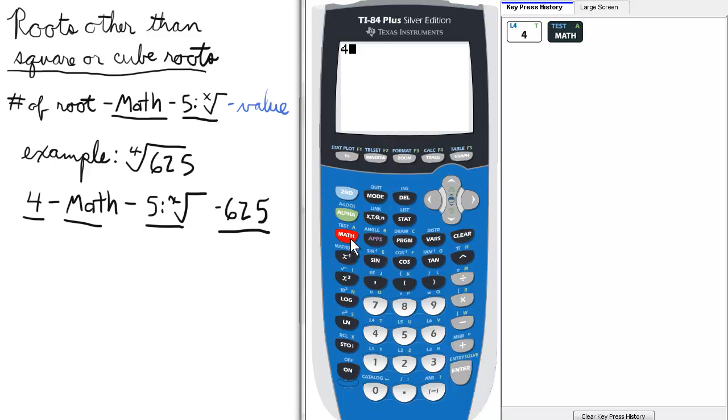And then we press the math button. And then from the math menu we select 5, the fifth option, which is the x-th root of something. So now we have the fourth root of, and then the number we want under the radical is 625, and then we press enter. So the fourth root of 625 is 5.